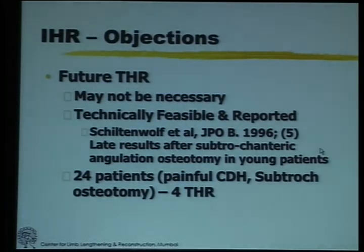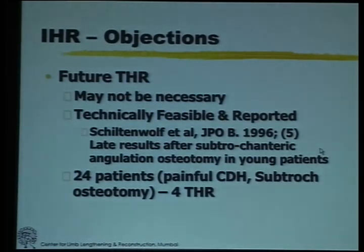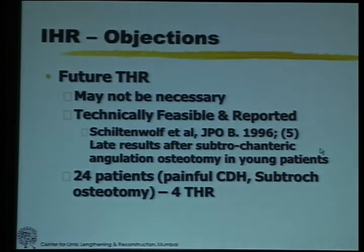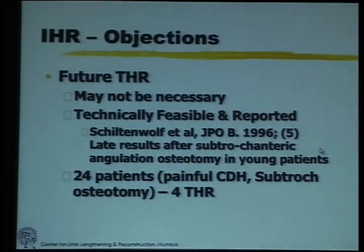A future total hip replacement may not be necessary as far as the data in the literature goes. But even if it is needed, it is not impossible for someone who is experienced in arthroplasty. It becomes a technically difficult surgery but not an impossible one. This has already been reported as early as 1996, where of 24 patients who had had subtrochanteric osteotomy, four had an arthroplasty without undue problems. Technically you have to straighten it, do the osteotomy, use longer stems, etc. But that remains one of the possible objections for hip reconstruction.